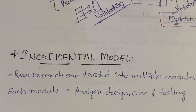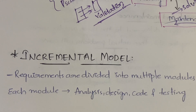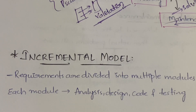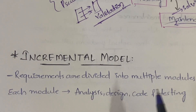In the incremental model, your requirements are divided into multiple modules. For example, let's take constructing a house. When constructing a house, you need materials for electricity, plumbing, painting, and general construction — so you have different modules. Paints come under the painting module; pipes, taps, showers, washroom tiles come under plumbing; and wires, switchboards, switches, and sockets come under the electricity module. So you are dividing your requirements into multiple modules, and in each module you perform analysis, design, code, and testing.